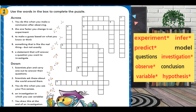Page 12, question number one: use the words in the box to complete the puzzle. We want to complete the puzzle. Number one, across. You do this when you make a conclusion after observing. What do you do after you make a conclusion after observing? Is it experiment, infer, model, predict, question, investigate, observe, variable, or hypothesis? Number one.